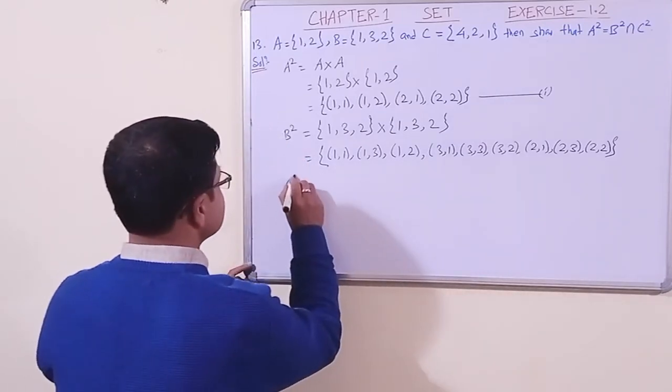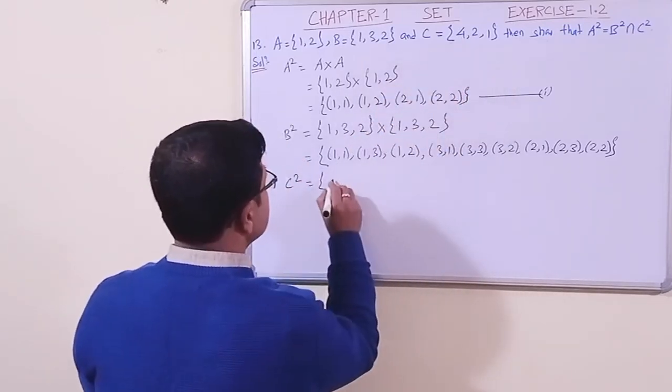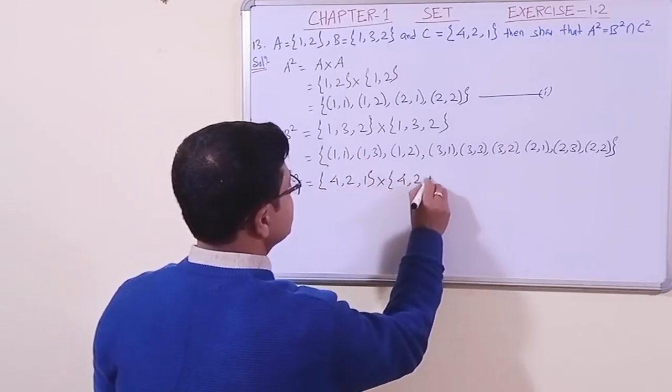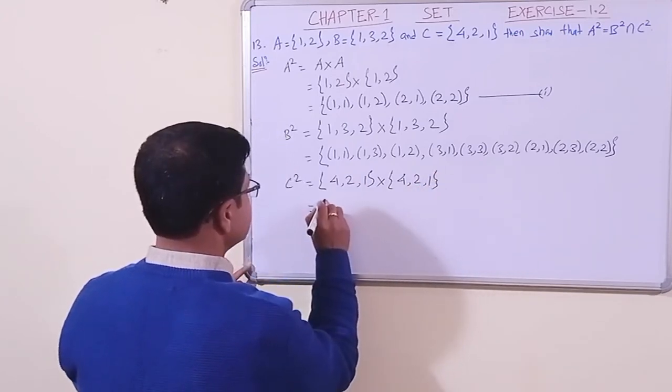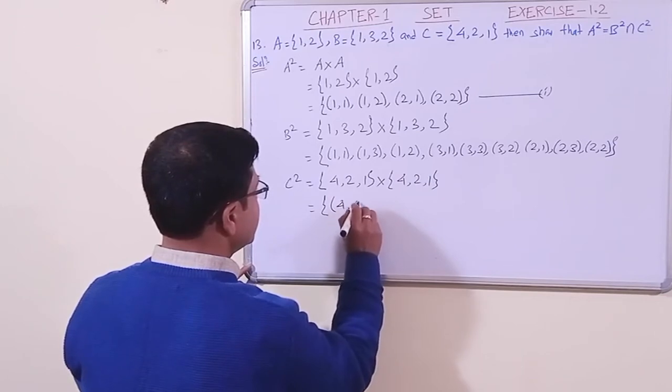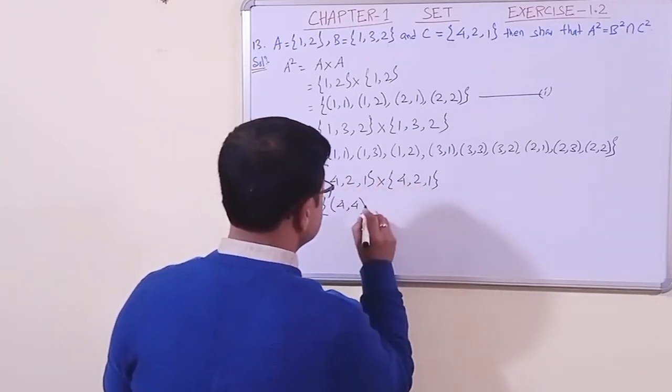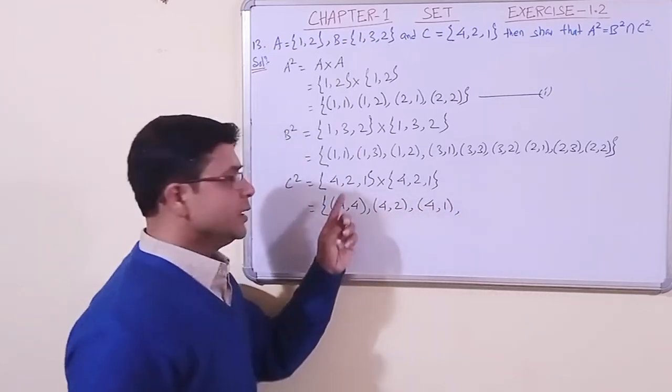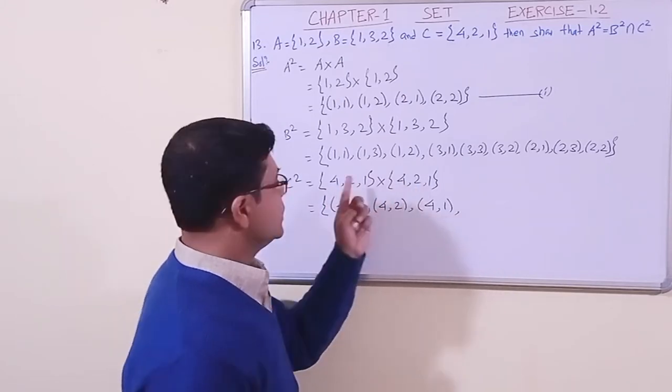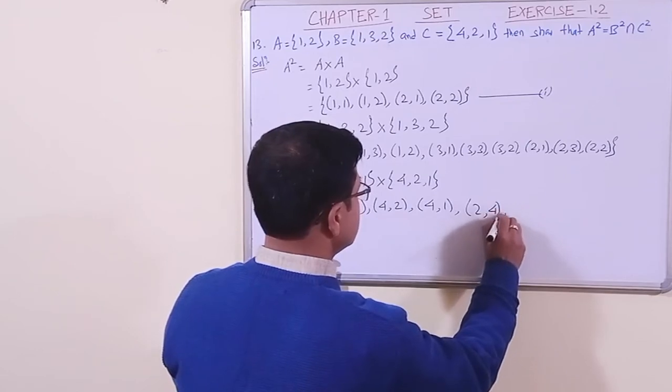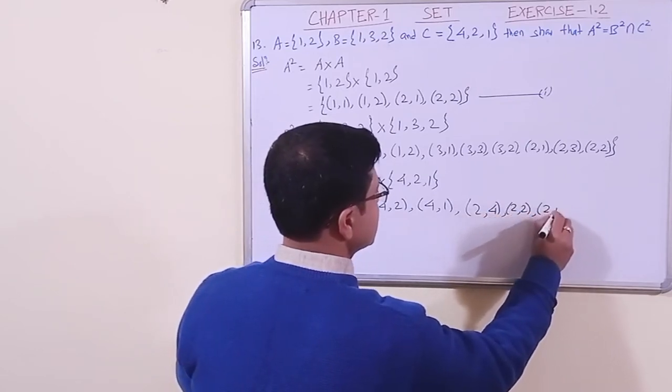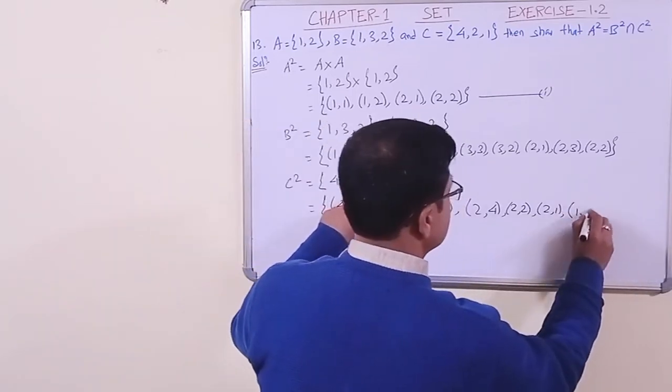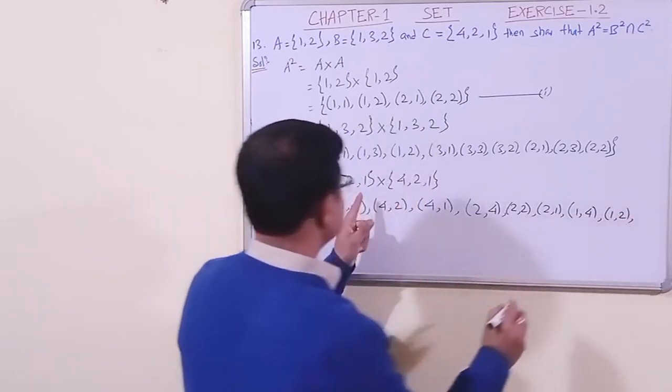Then what is left? C square: {4, 2, 1} cross {4, 2, 1}. (4,4), (4,2), (4,1). In this way we will make (4,2), (4,1). Then (2,4), (2,2), (2,1). Then with 1: (1,4), (1,2), and (1,1). So it is (1,4), (1,2), (1,1).